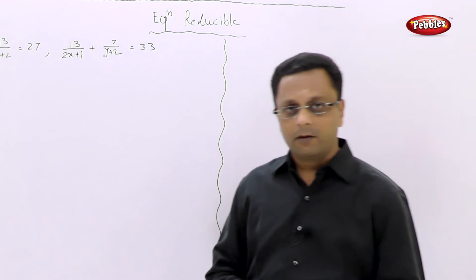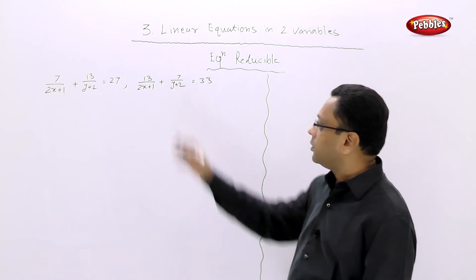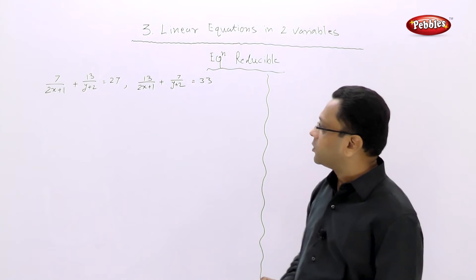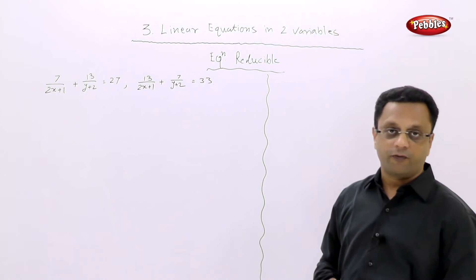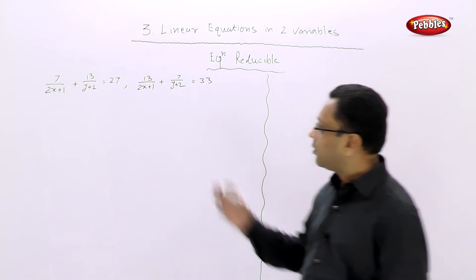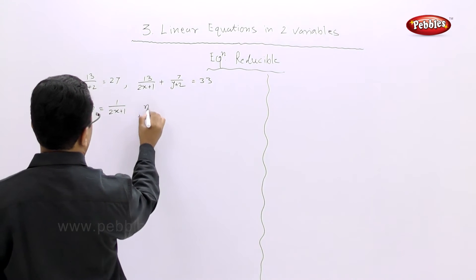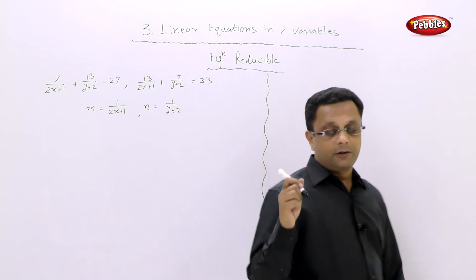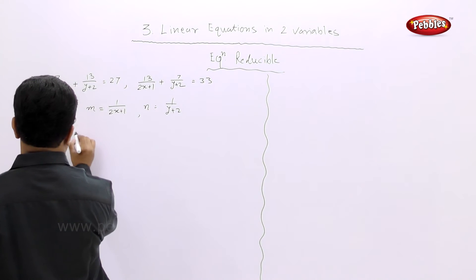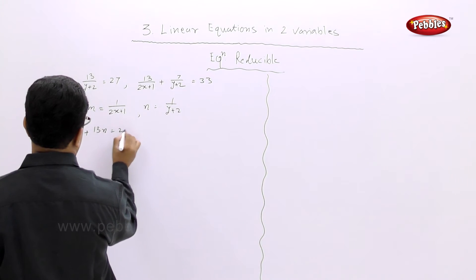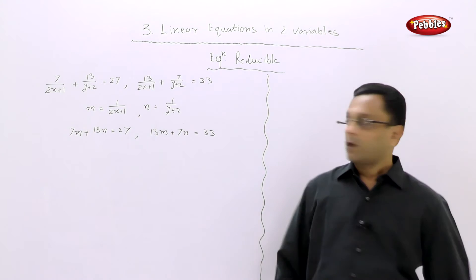Let us see one more example. The equations are: 7 upon 2x plus 1 plus 13 upon y plus 2 equal to 27, and 13 upon 2x plus 1 plus 7 upon y plus 2 equal to 33. These are not in linear equation form right now. We have to first reduce it to the linear form. We will take m equal to 1 upon 2x plus 1 and n equal to 1 upon y plus 2. When you substitute, we get 7m plus 13n equal to 27, and 13m plus 7n equal to 33.